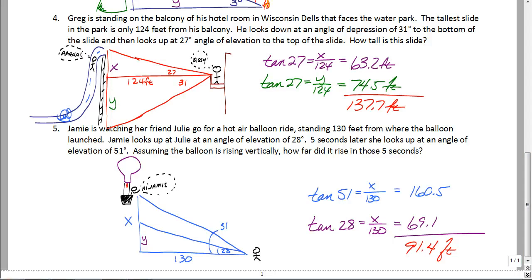So let's see if you got it right. The water slide problem, you had to find the angle of elevation and the angle of depression to find out how high the slide is. So you've got the top part, which is 63.2 feet. You've got the bottom part, which is 74.5 feet. So basically, all you have to do is take both of those and you just add them together to find the total height of the water slide.